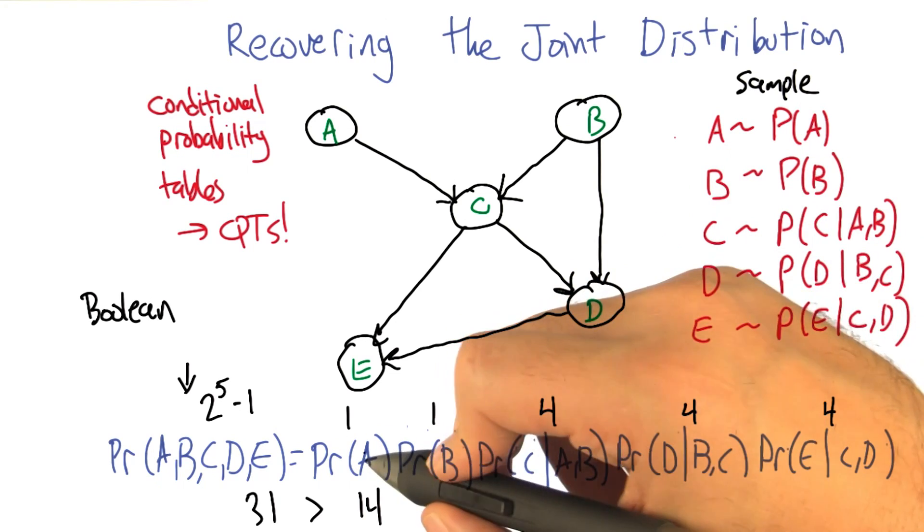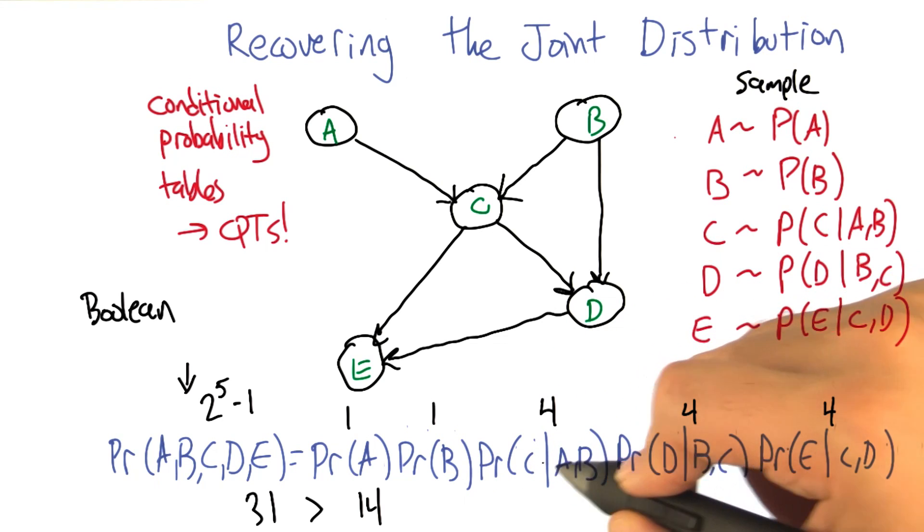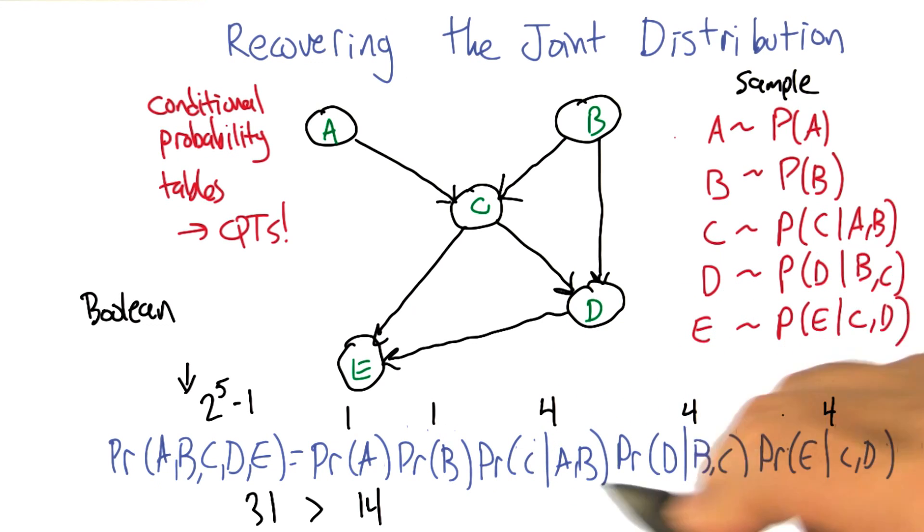The probability of getting some particular combination like A is heads and B is tails and C is heads and D is heads and E is heads, we could just break that down into the probability of the individual events.